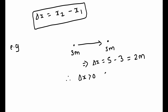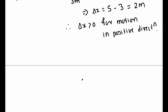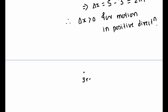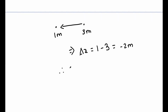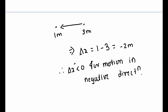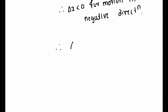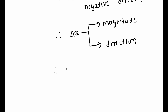A positive delta x implies motion in the positive direction. If a particle moves from 3 meters to 1 meter, then delta x = 1 - 3 = -2 meters. Therefore, a negative delta x implies motion in the negative direction. We can see that displacement delta x gives us information not only about the magnitude of displacement, but also about the direction in which the particle is displaced. Therefore, displacement is a vector quantity.